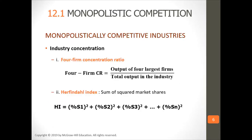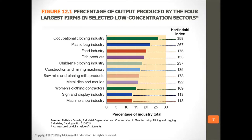For industry concentration, the four-firm concentration ratio is the output of the four largest firms as a share of total industry output. The Herfindahl index is the sum of squared market shares — you square each firm's market share and add them together. The occupational clothing industry has the highest Herfindahl index, so it's very monopolistically competitive, then plastic bagging, the feed industry, and fish products. The higher the Herfindahl index, the more monopolistically competitive the industry is.